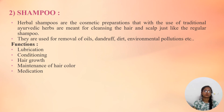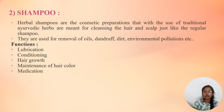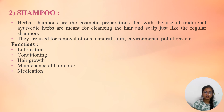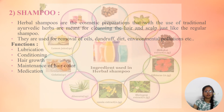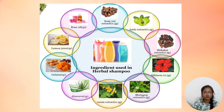Next topic is herbal shampoo. Herbal shampoos are cosmetic preparations that, with the help of traditional Ayurvedic herbs, are meant for cleansing the hair and scalp just like regular shampoo. They are used for the removal of white and rough dirt and environmental pollution. Some functions of herbal shampoo are lubrication, conditioning, hair growth, maintenance of hair color, and medication. Some herbal ingredients used in herbal shampoo are rose oil, soap nut extract, Amla extract, Shikakai extract, Hibiscus and Bhringraj extract, Cassia extract, aloe vera, gelatin, and lemon juice.